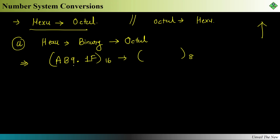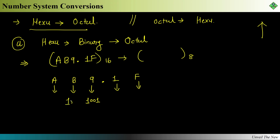First, I will write down the binary of this hexadecimal number. For each digit in the hexadecimal, I write its binary in groups of four digits. For A (which represents 10), the binary is 1010. For B (which represents 11), the binary is 1011. For 9, the binary is 1001. After the point, for 1 the binary is 0001, and for F the binary is 1111. This gives us the full binary of AB9.1F.